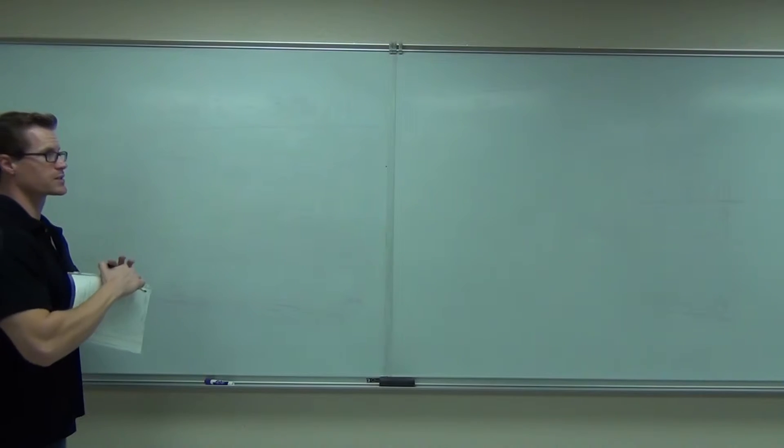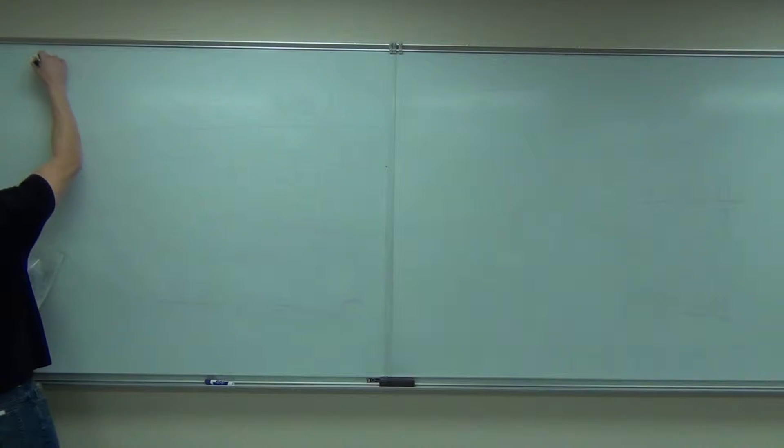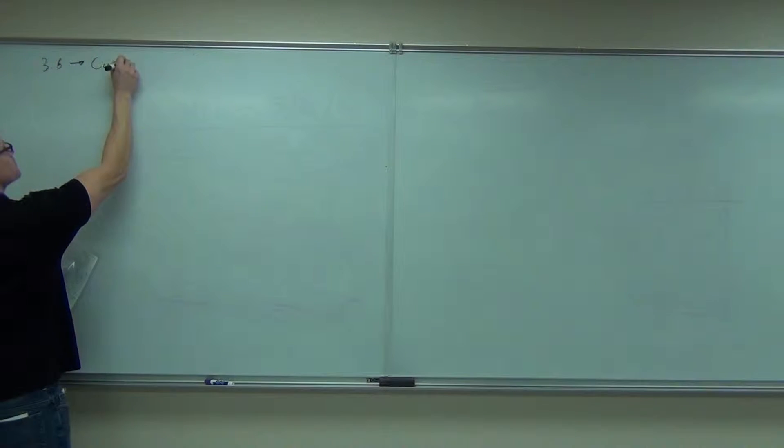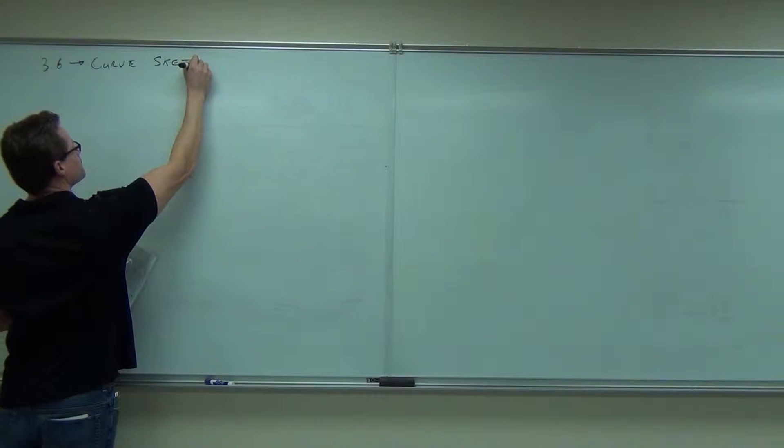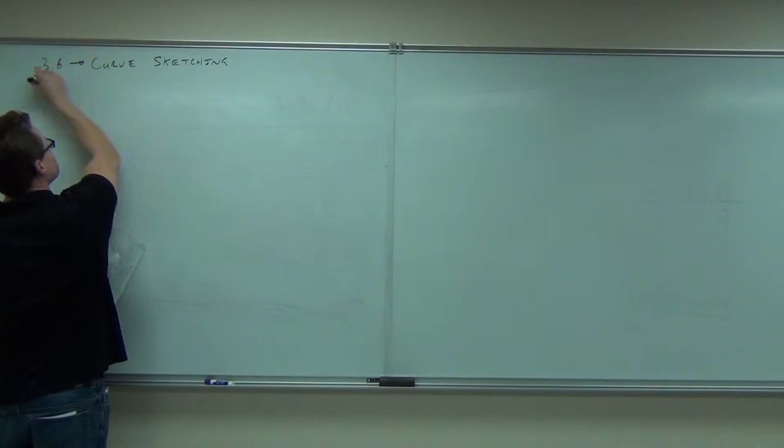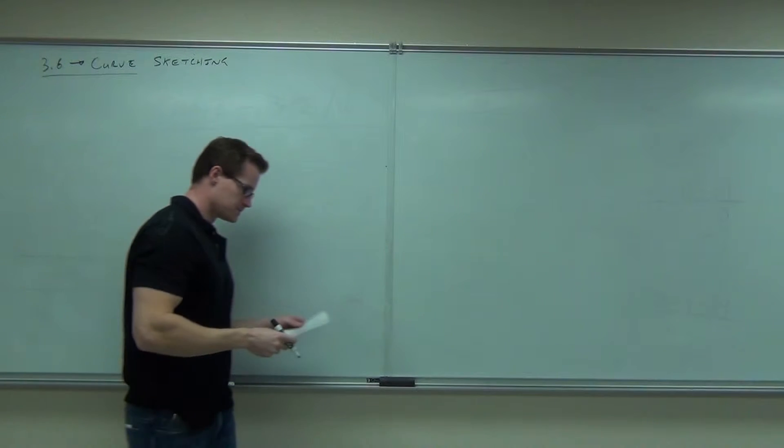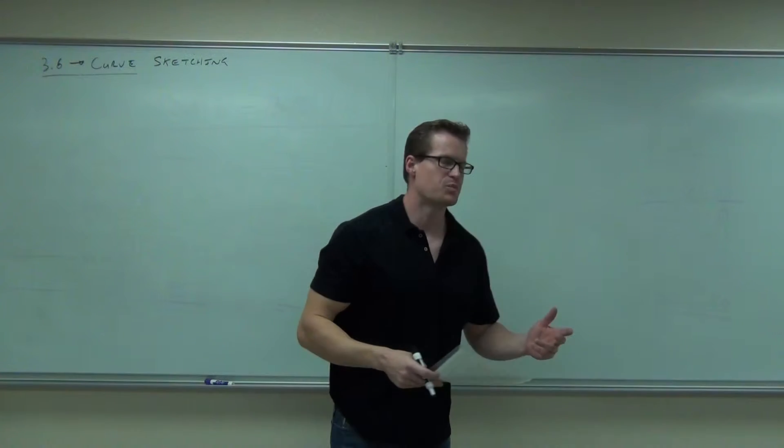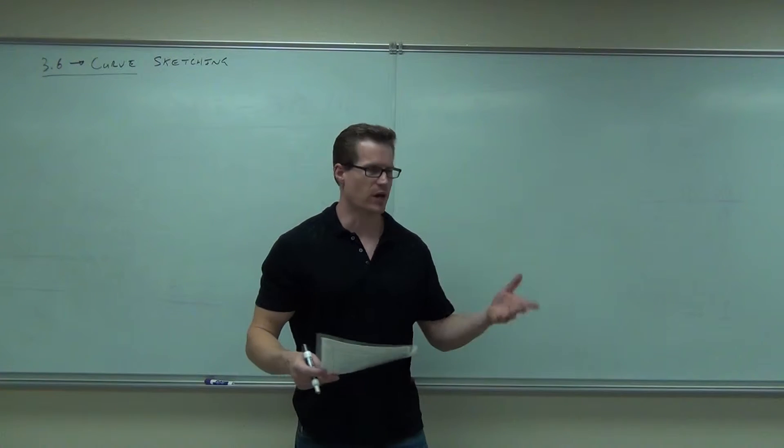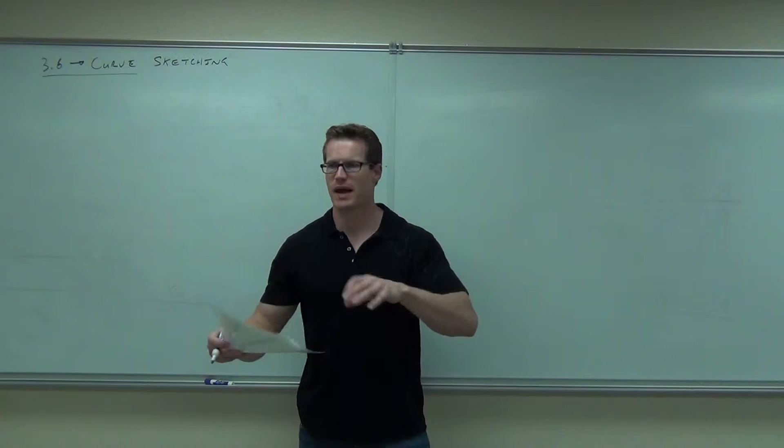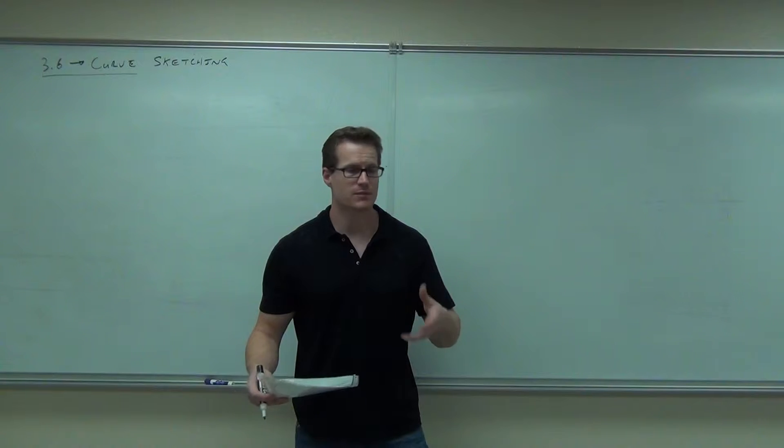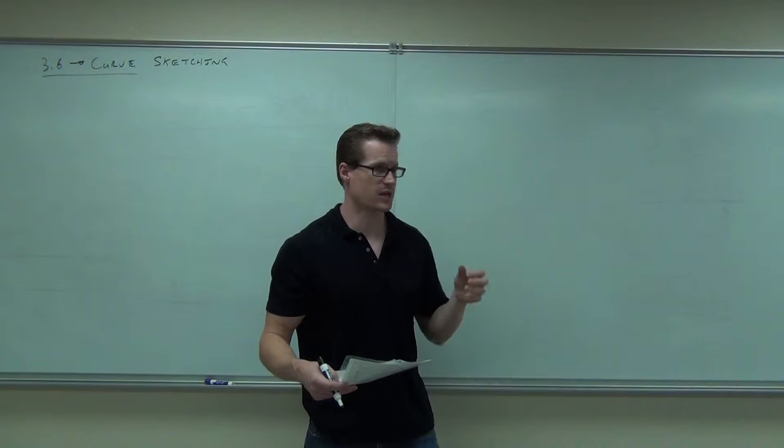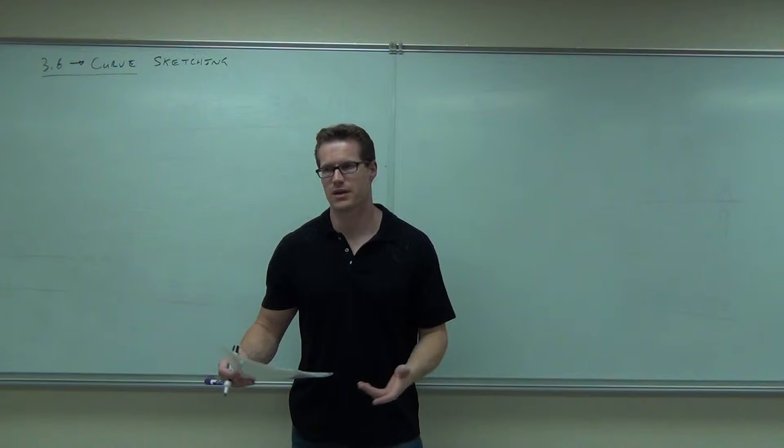So let's talk about section 3.6, curve sketching. This is basically using intercepts like x and y intercepts, your relative max, relative min, which are your relative extrema, and your concavity to sketch a curve, to graph it, to see a really good approximation of what it looks like without a graphic calculator.